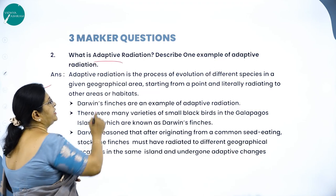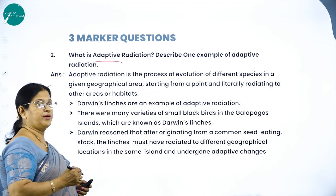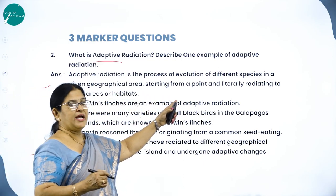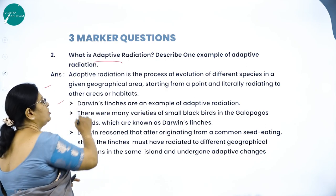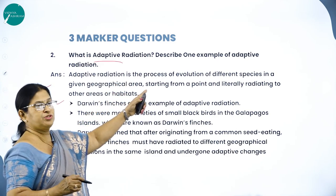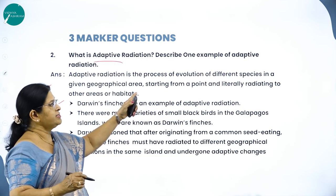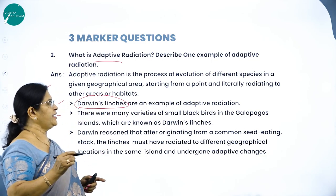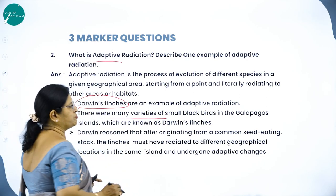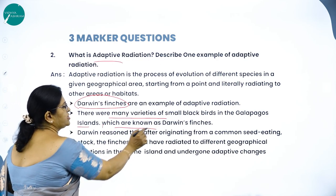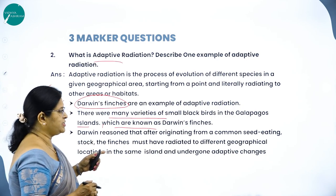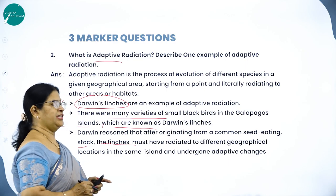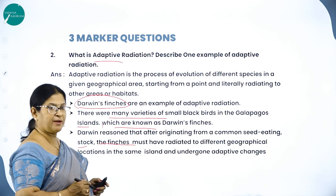What is adaptive radiation? Adaptive radiation is the process of evolution of different species in a given geographical area, starting from a point and literally radiating to other areas or habitats. The classical example is Darwin's finches — many varieties of small black birds in the Galapagos Island. Darwin reasoned that after originating from a common seed-eating stock, the finches must have radiated to different geographical locations and undergone adaptive changes.